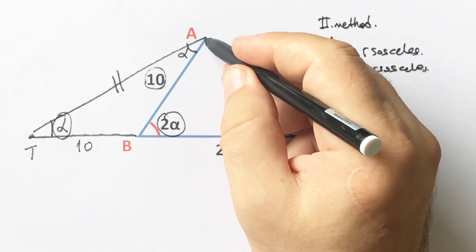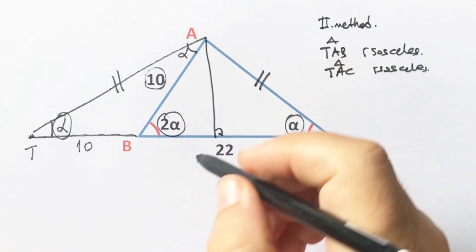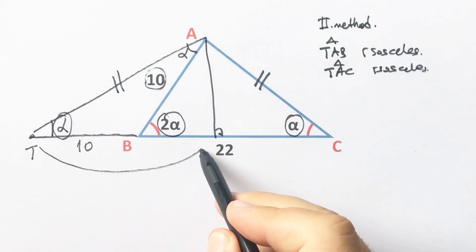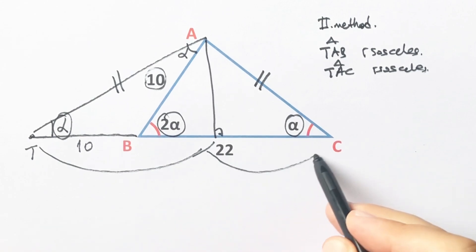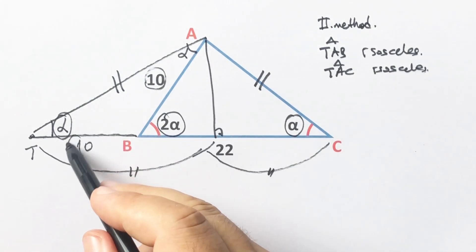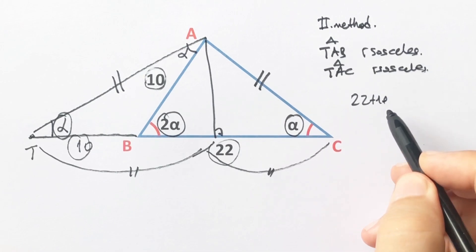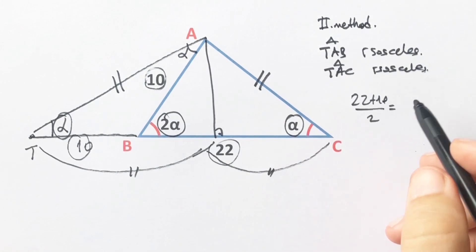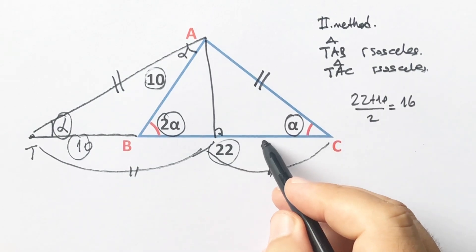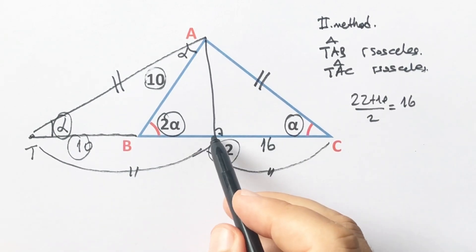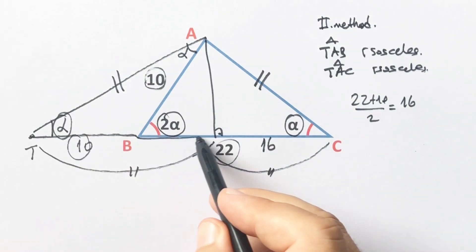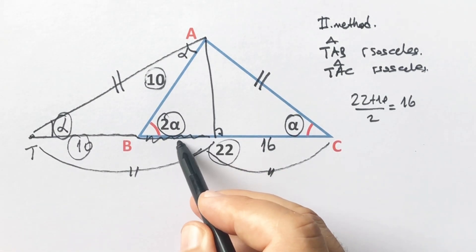If we draw a perpendicular line, the base will be divided into two equal parts. Therefore, 22 plus 10 over 2 equals 16. That means here must be 16 and 6 units, 6 units left here.